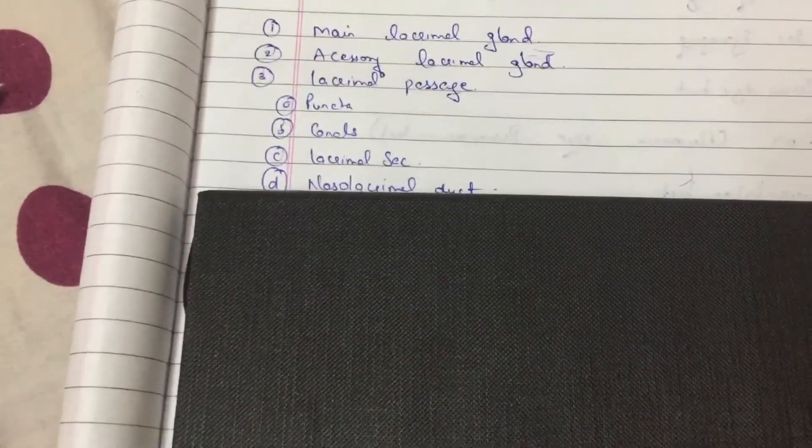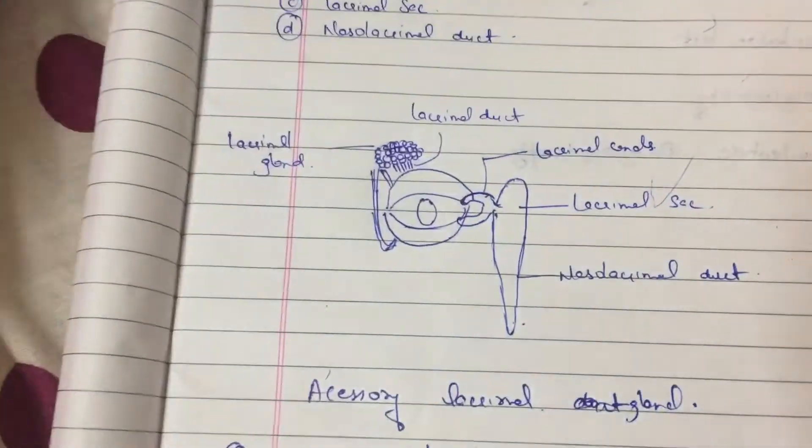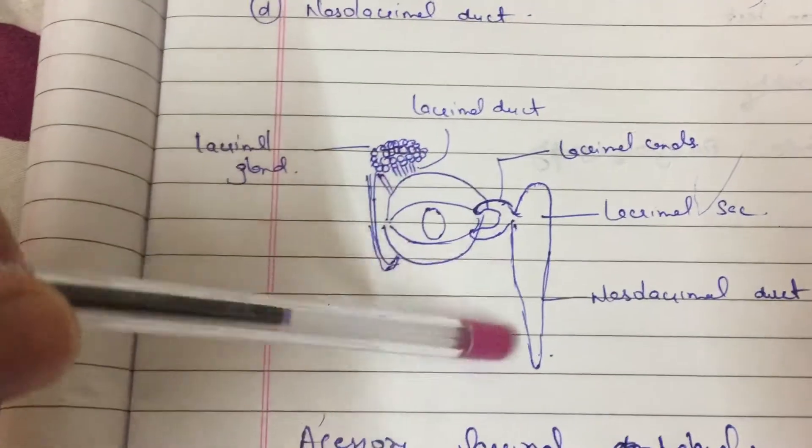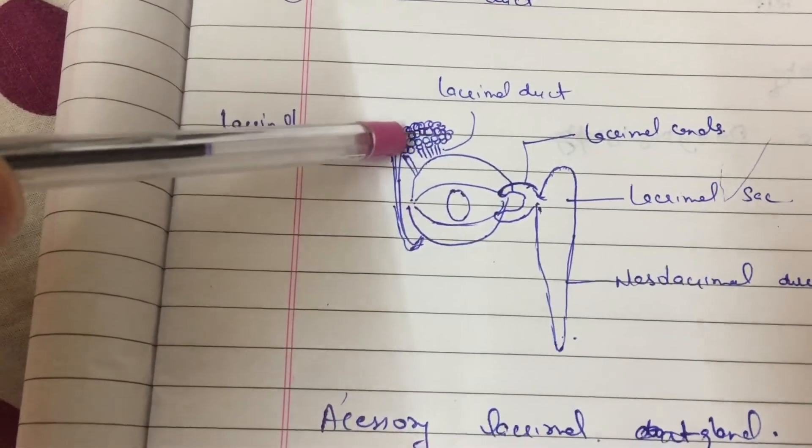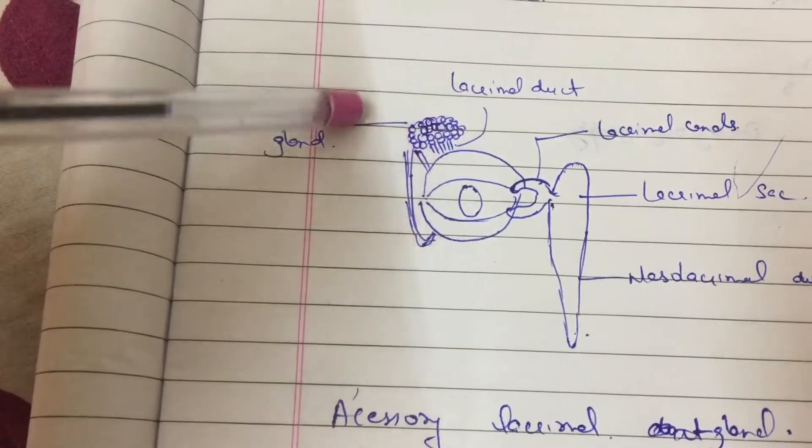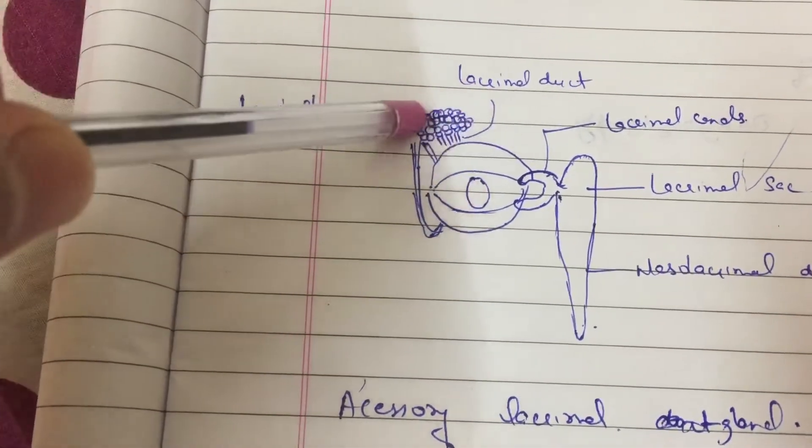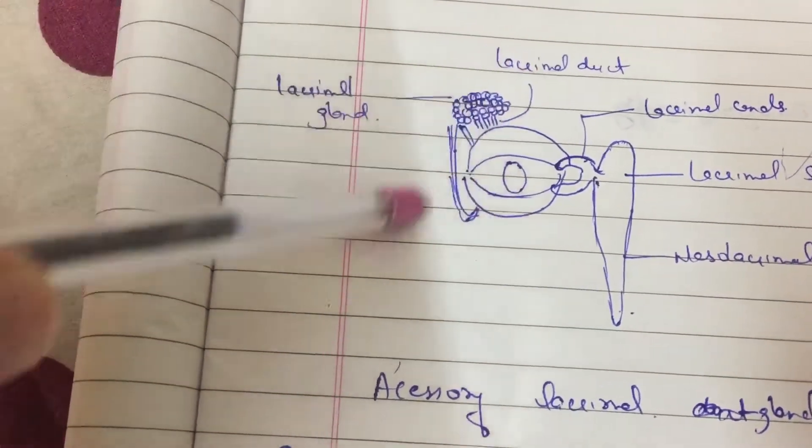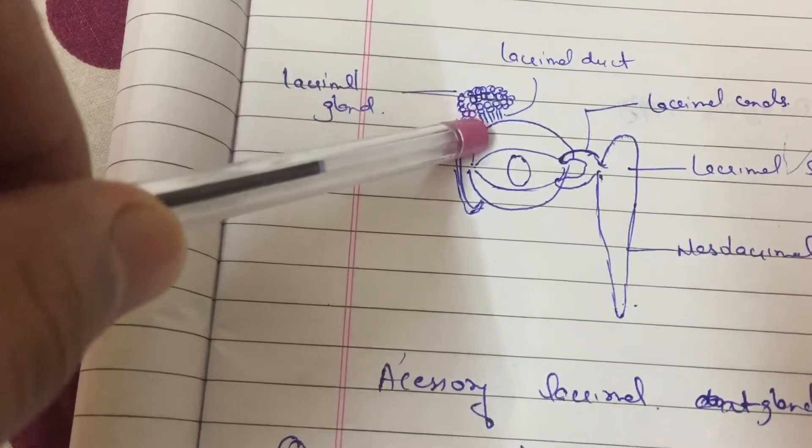Let's go into the anatomy and let's see how this lacrimal gland looks like, where it is situated and how it opens. So this is a figure in which you can see I have made a right eye with lacrimal gland situated onto the lateral side into the orbital fossa. And this is the orbital fossa which is present within the frontal bone. This lacrimal gland opens through lacrimal duct.